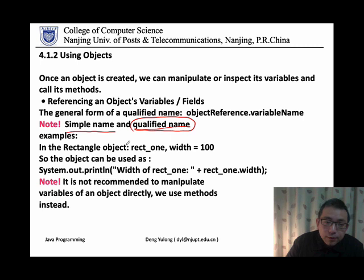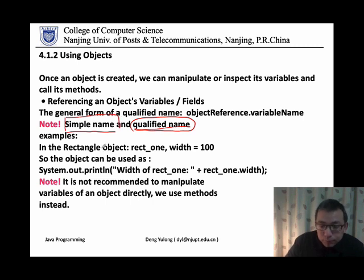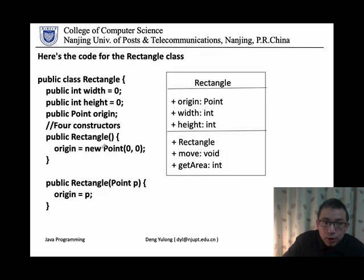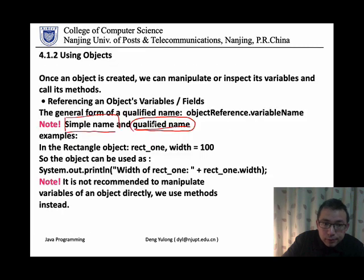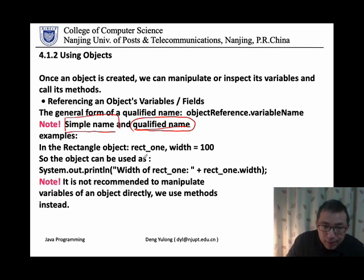The simple name means when we define a variable inside a class, we use a simple name. For example, in a rectangle, we have this number variable as width or height — I use the simple name. But if we want to access an object from outside the object's system, for example, the width and height variable of the rectangle object, we should use the qualified name.